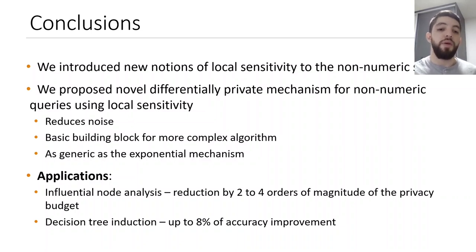We tested two applications. The first one is the influential node analysis, where we had a reduction by 2 to 4 orders of magnitude of the privacy budget. And the second application is the decision-tree induction. We skipped that application here in this presentation, but the listeners can check it out in our paper. In that application, we had up to 8% of accuracy improvement.